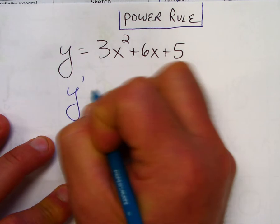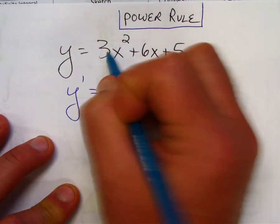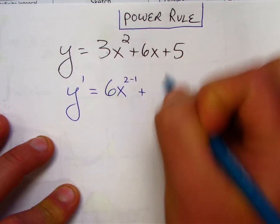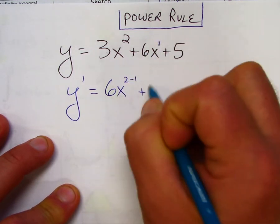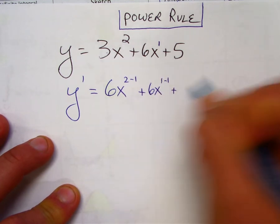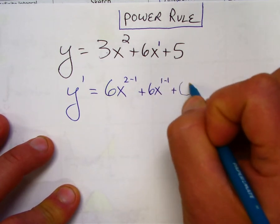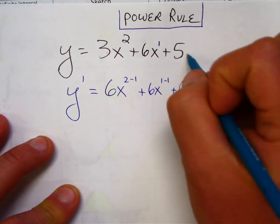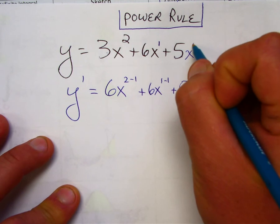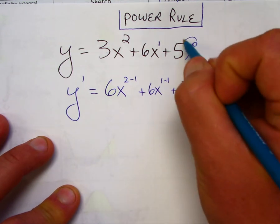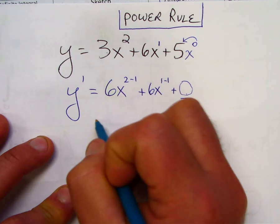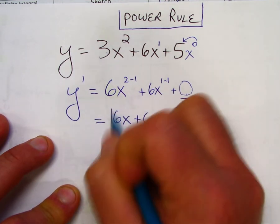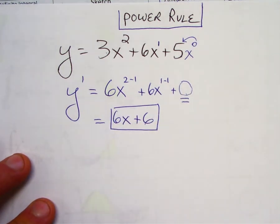So y prime, you just simply multiply by the exponent to the coefficient, and then subtract 1 from the exponent. That's a 1. 1 times 6 is 6. 1 minus 1 is 0. And this becomes 0. The derivative of any constant is 0, and the reason why that is, is this is considered a 0 degree polynomial. And 0 times 5 is 0. Now if you clean this up, it's 6x plus 6. That is the derivative.